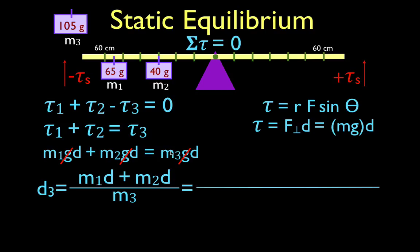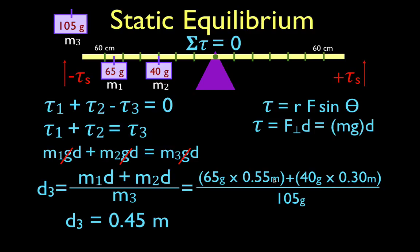You plug those values in, these are the values, the mass and the distance for number 1, the mass and the distance for number 2. You'll notice we converted for metric units, the distances into meters, divided by the mass of number 3 in grams, and you get that the location for mass number 3 is 0.45 meters.